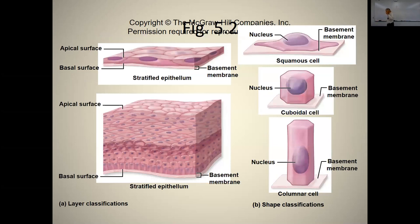This image is mislabeled. The top layer here is not stratified — it's a simple squamous epithelium. The lower one is a stratified squamous epithelium — see how many layers there are. It's called stratified squamous. The cells are cuboidal at the bottom but the top parts are squamous. This should say 'simple' here — I just realized that was a mistake.